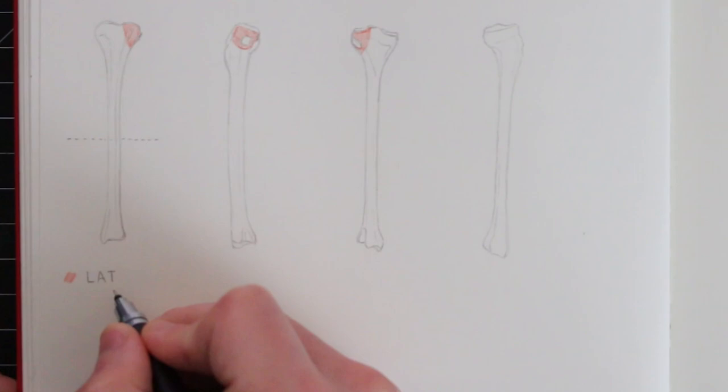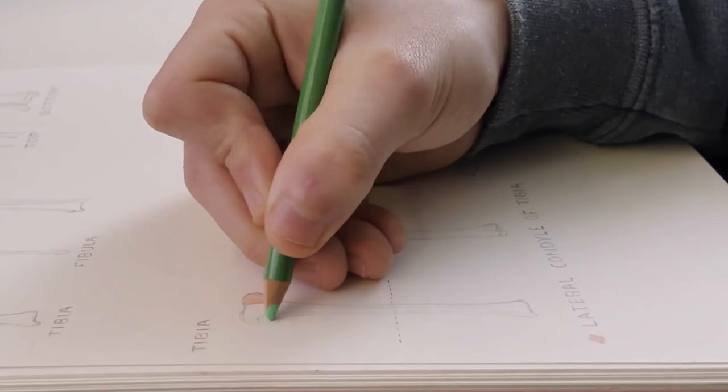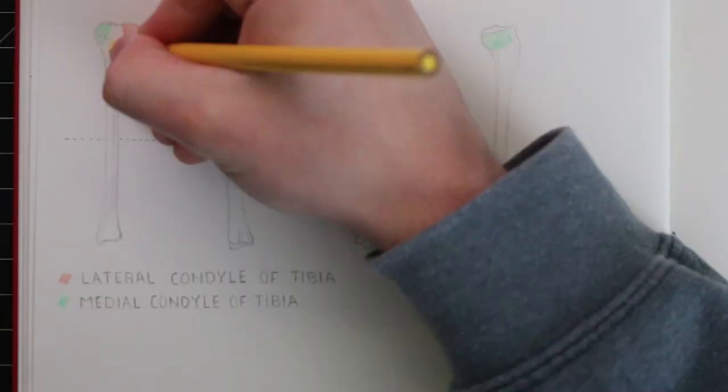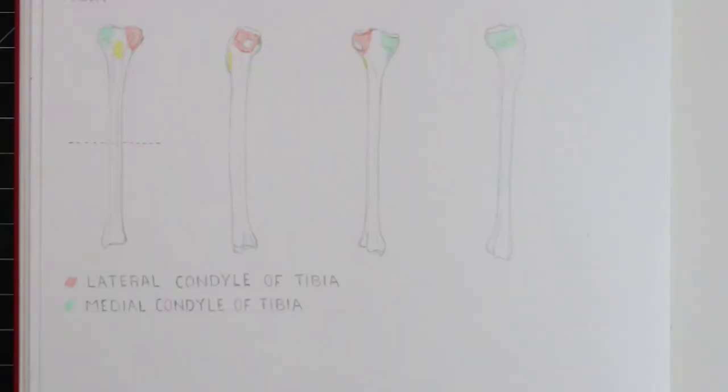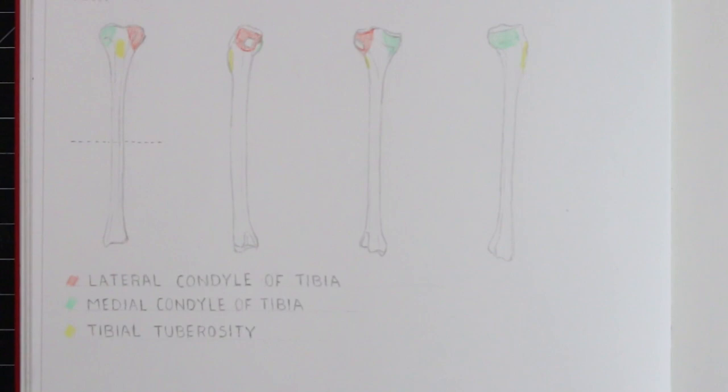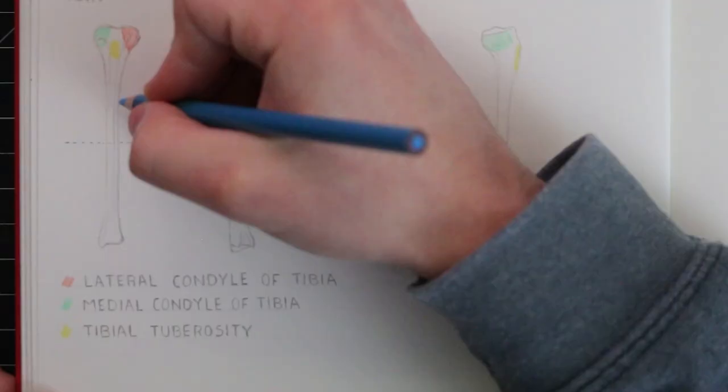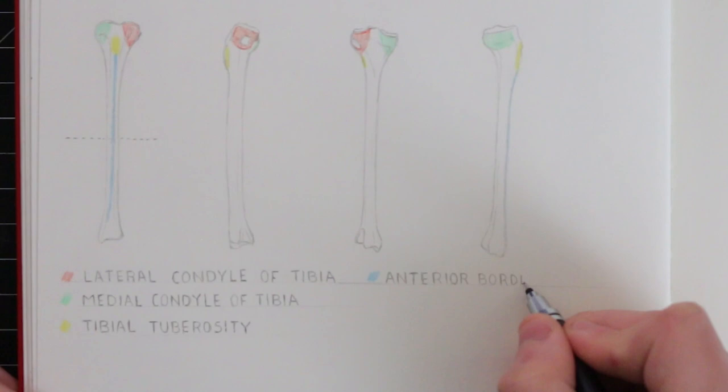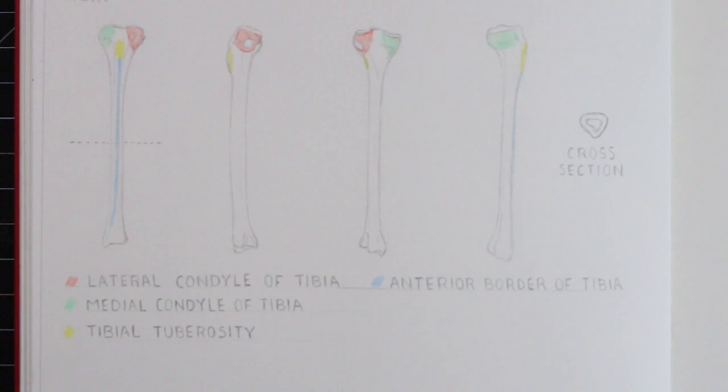At the top there is the lateral and medial condyle. These are the sections which protrude out at the sides. And close to here there is also the tuberosity of the tibia at the front. Now along the front of the tibia there is what is called the anterior border. You'll notice that the body of the tibia in cross section is shaped similar to a rounded triangle. The sharpest edge at the front is the anterior border dividing the medial and lateral sides.